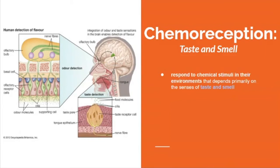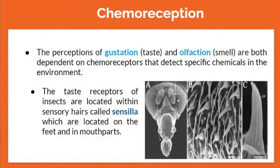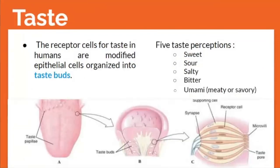Animals respond to chemical stimuli in their environments, depending primarily on the senses of taste and smell. The perception of gustation and olfaction are both dependent on chemoreceptors that detect specific chemicals in the environment. The taste receptors of insects are located within sensory hairs on their feet and mouth parts. In humans, the receptor cells for taste are modified epithelial cells organized into taste buds.